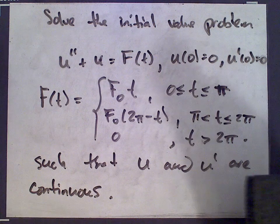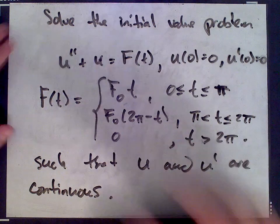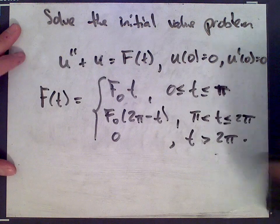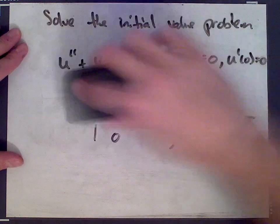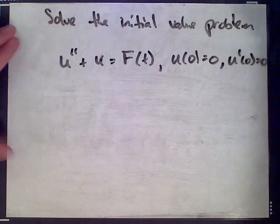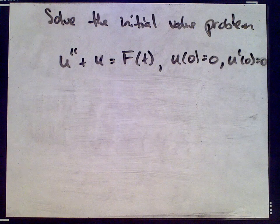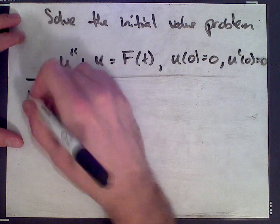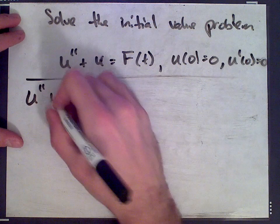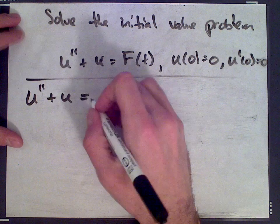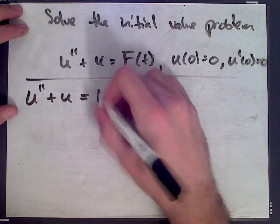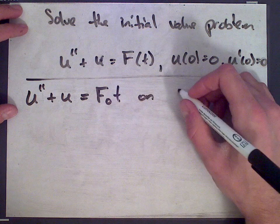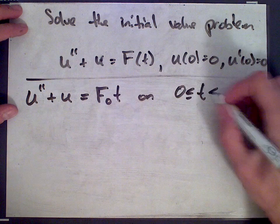First let me give you the solutions and then we'll solve for the constants. So on the first interval, we have u double prime plus u equals f₀ t on the interval from 0 to π.